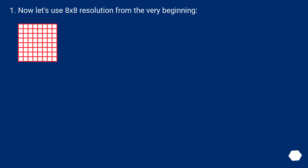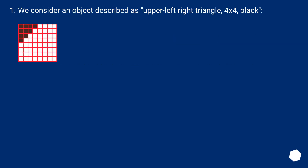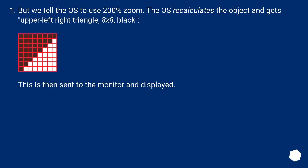Now let's use 8×8 resolution from the very beginning. We consider an object described as an upper-left right triangle 4×4 black, but we tell the OS to use 200% zoom. The OS recalculates the object and gets an upper-left right triangle 8×8 black. This is then sent to the monitor and displayed.